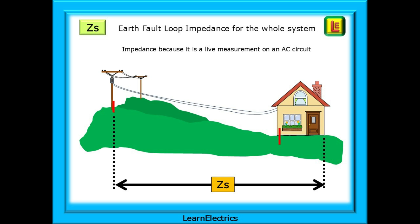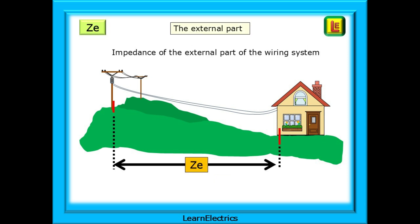We call it an impedance because it is a live measurement on an AC circuit, but it is still measured in ohms. ZE is the impedance of the external part of the wiring system. In a dwelling, this will be from the consumer unit, out of the property, into the general mass of earth, and back along the line conductor to the consumer unit.